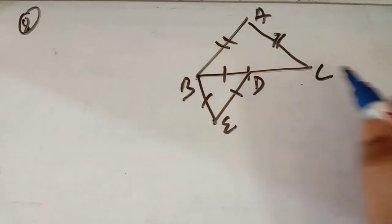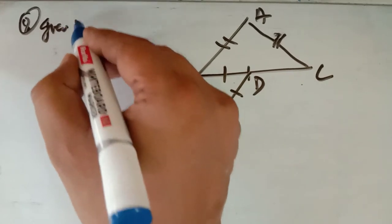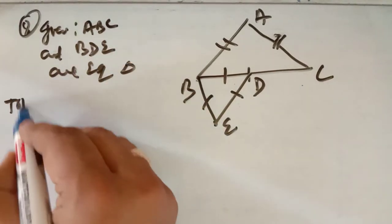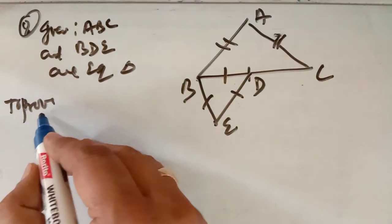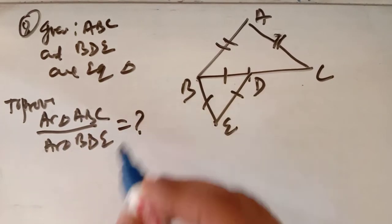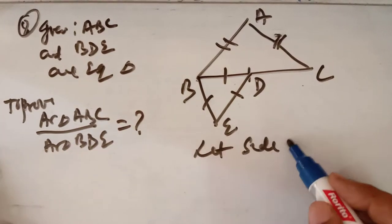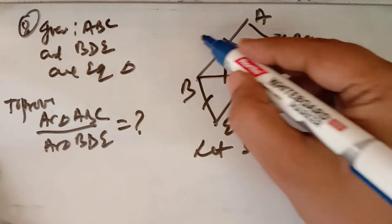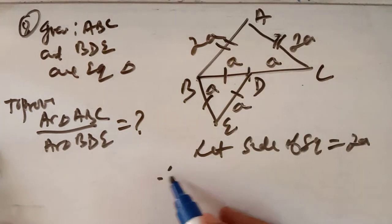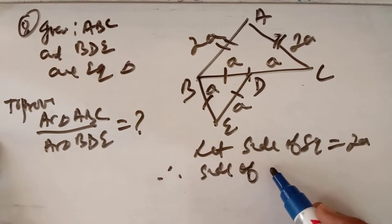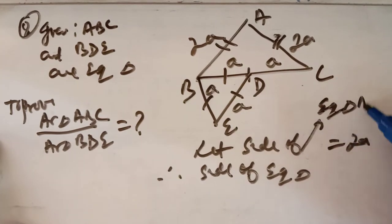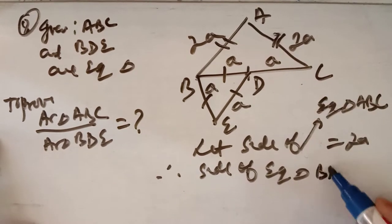Given that ABC and BDE are equilateral triangles and you are to find the ratio of their areas — area of triangle ABC upon area of triangle BDE. Let the side of the equilateral triangle ABC equal 2A, so that BD equals A. Therefore the side of equilateral triangle BDE is A, and the side of equilateral triangle ABC is 2A.